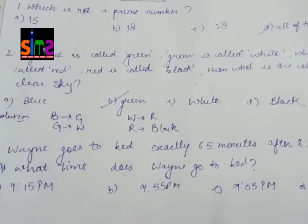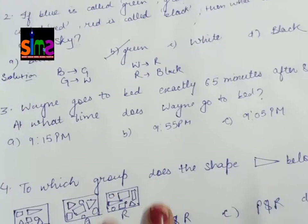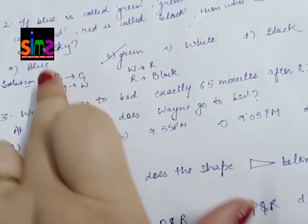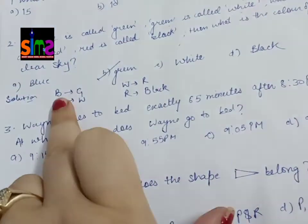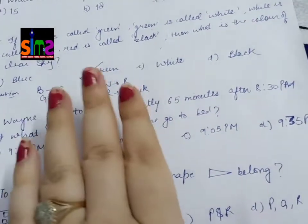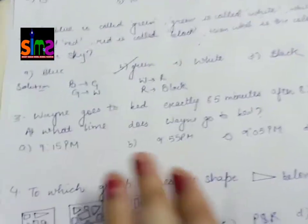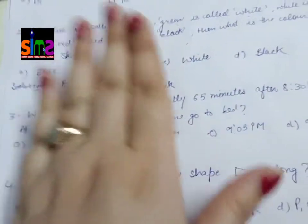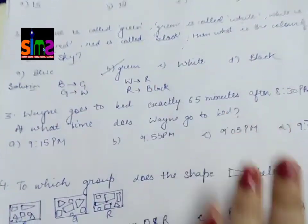This type of question you are going to get. You have to put it on rough paper. Whatever they have said, blue is called green, so put an arrow. Whatever reference you have given, you have to put an arrow on the rough paper.